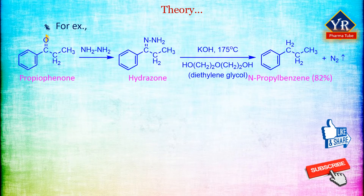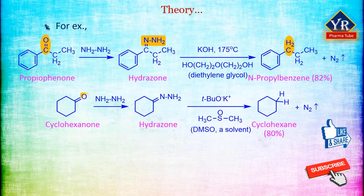For example, propiophenone first reacts with hydrazine to form a hydrazone derivative. This hydrazone is then treated with potassium hydroxide at 175 degrees centigrade in the presence of diethylene glycol to form n-propylbenzene, with a yield of about 82%. In the second example, cyclohexanone is converted to cyclohexane under similar conditions, but in the presence of dimethyl sulfoxide solvent.